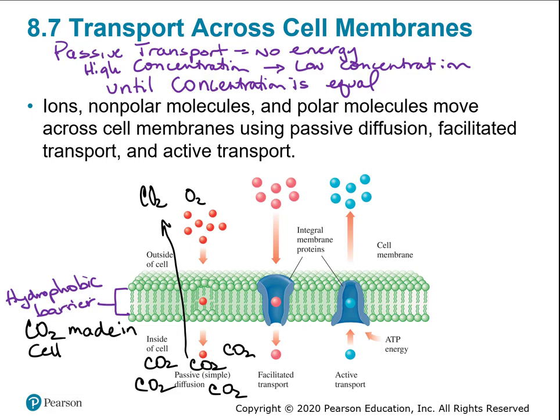Remember, the hydrophobic barrier blocks salts, water, and polar molecules like sugar - they can't move through the cell membrane layer. But gases like oxygen and carbon dioxide are nonpolar, so they can dissolve through the barrier without needing a carrier or channel. The red balls represent oxygen diffusing through the membrane from high concentration outside the cell to low concentration inside. Carbon dioxide is always being made inside the cell, so it's always at higher concentration inside and diffuses out.